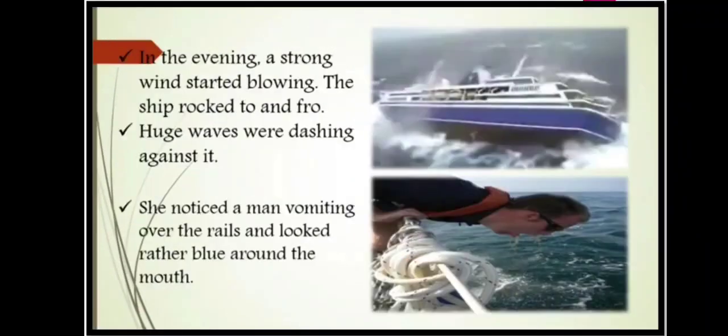In the evening, a strong wind started blowing. The ship rocked to and fro and huge waves were dashing against it. Vasantha noticed a man vomiting over the rails, who looked rather blue around the mouth.